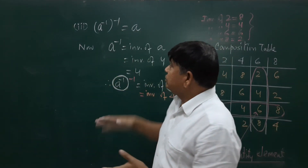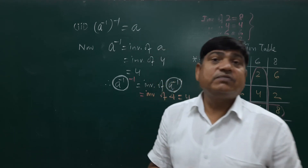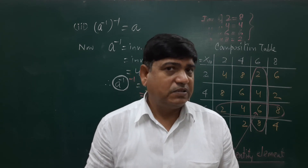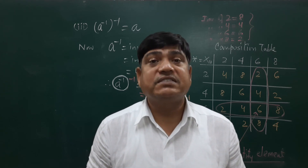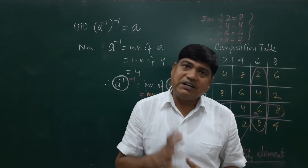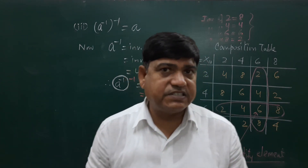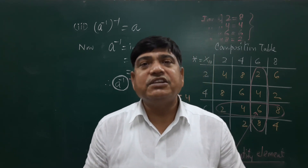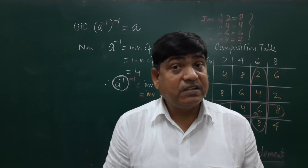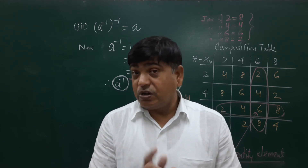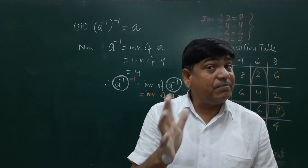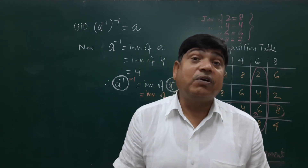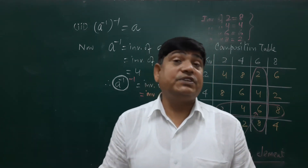So this is the way to verify the properties we have discussed. I will give you one problem — at home, try to prove these properties using different examples. This part is now complete. In the next video, we will consider a new topic related to groups: the order of an element. We have done order of a group, which is the number of elements in a finite set. Next we define order of an element. Thank you very much.